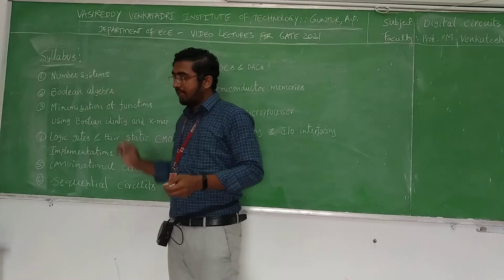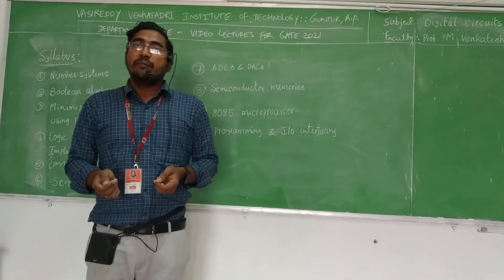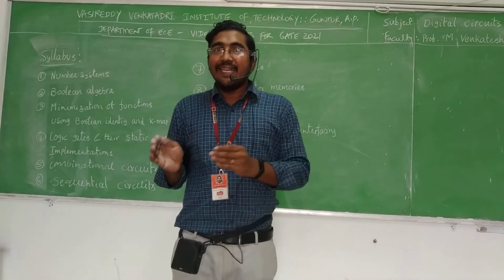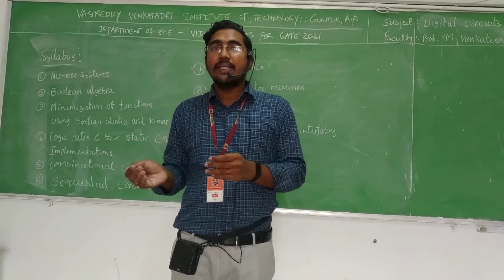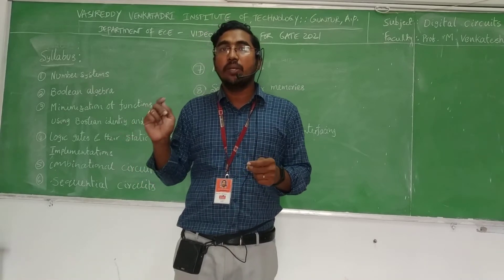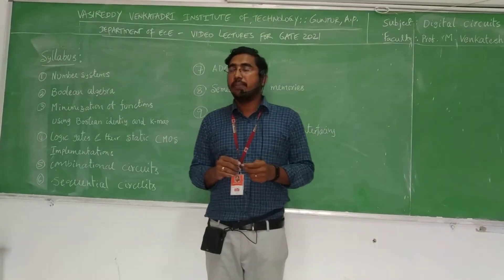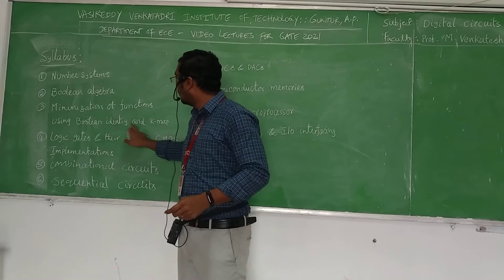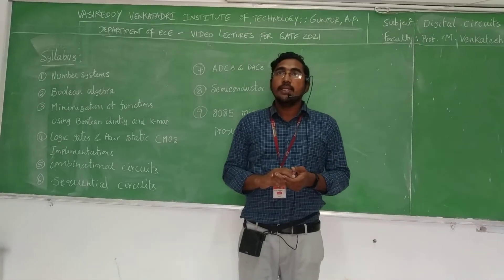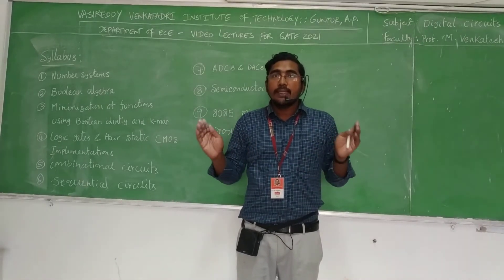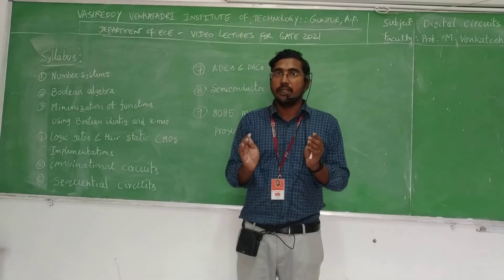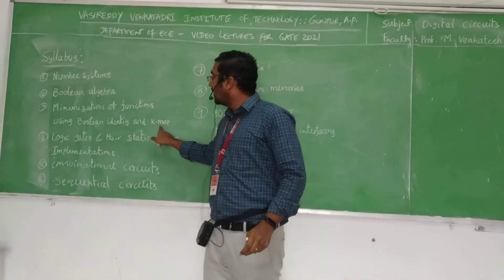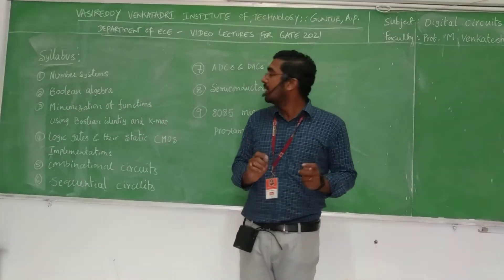Then Boolean algebra. In normal algebra we deal with equations, but Boolean algebra deviates from normal algebra — it has only two identities: 0 and 1. Minimization of a function uses Boolean identity and K-map. Minimization means reducing a larger expression into a smaller expression using Boolean identities or K-maps to reduce Boolean expressions.